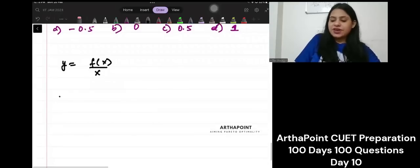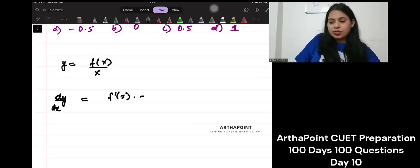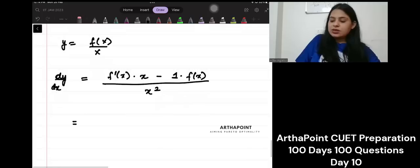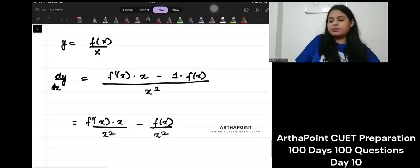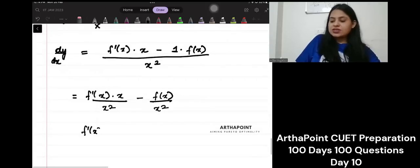What can we do? Let's find out dy by dx. This will be differentiation of numerator into denominator as it is minus differentiation of denominator into numerator as it is upon denominator holds. This will be f dash x into x by x square minus fx by x square. This will be dy by dx.